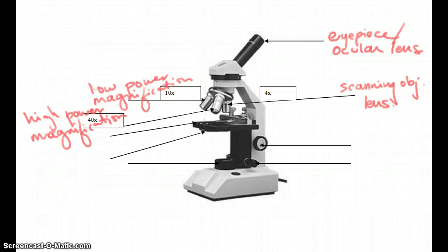The part just below where we put the slide is called the stage. Underneath the stage is a disk that allows different amounts of light to come through from the light source. And the thing that controls how much light goes through the cell, through the objective lens, through the ocular lens, and to your eye is called the diaphragm.